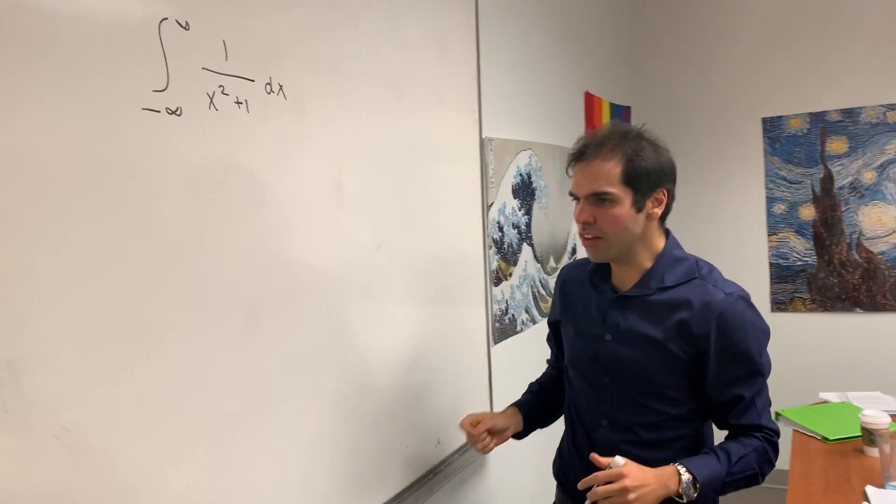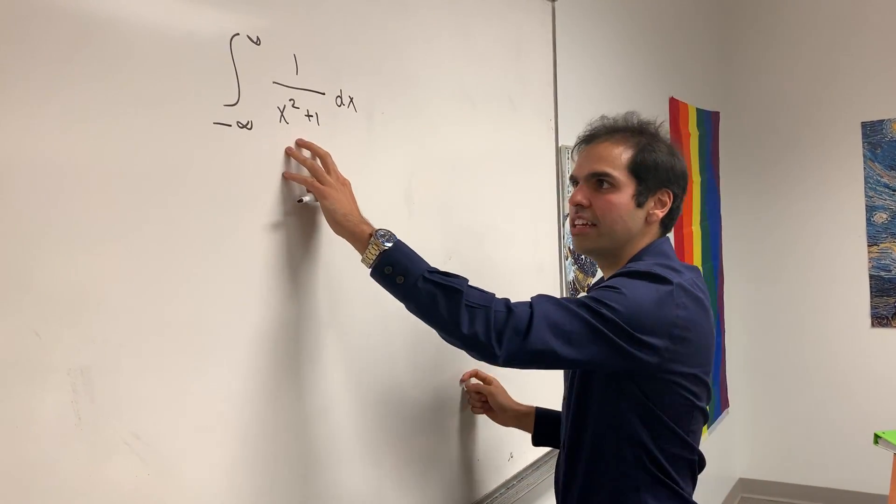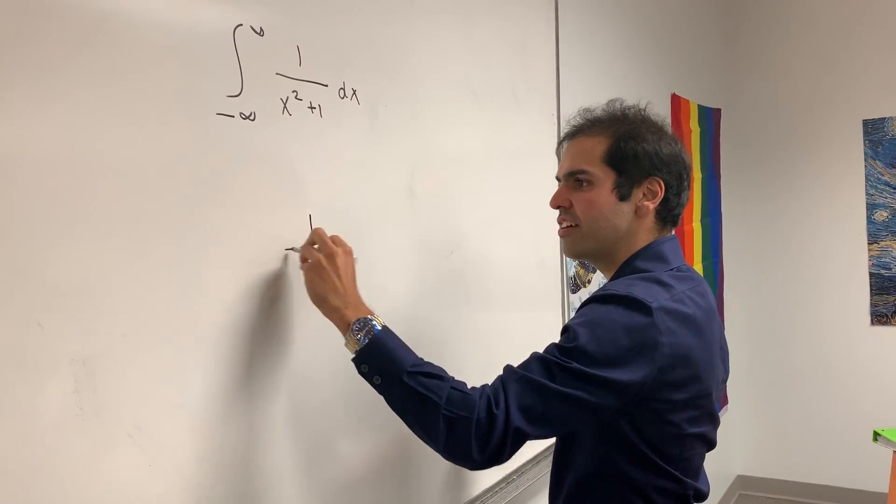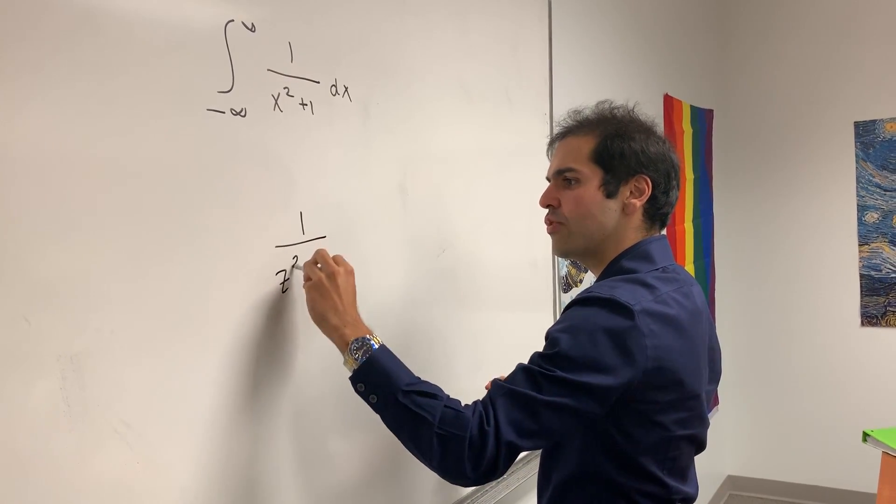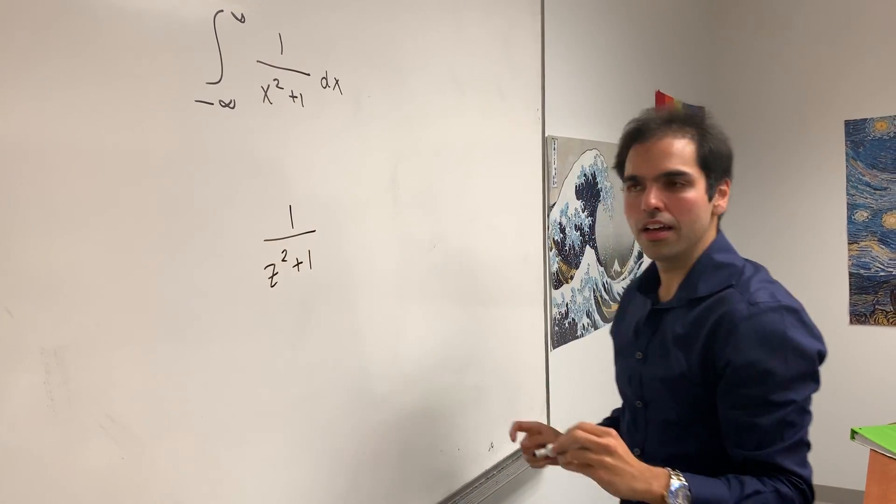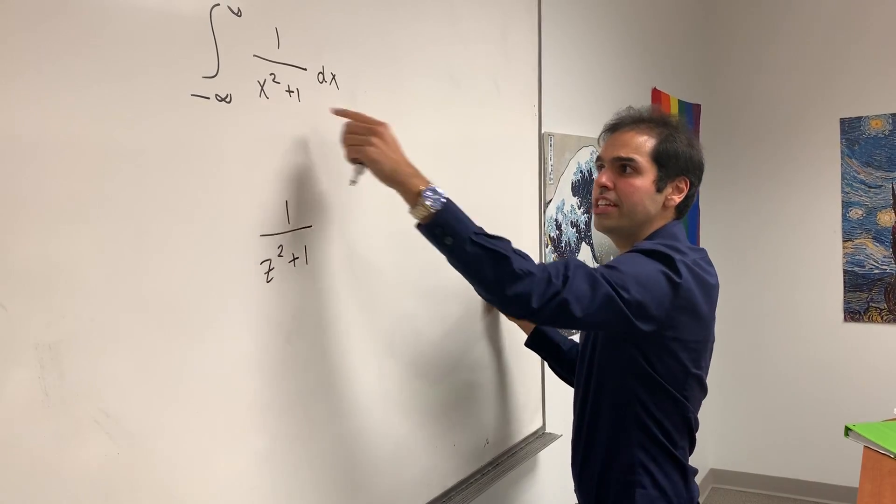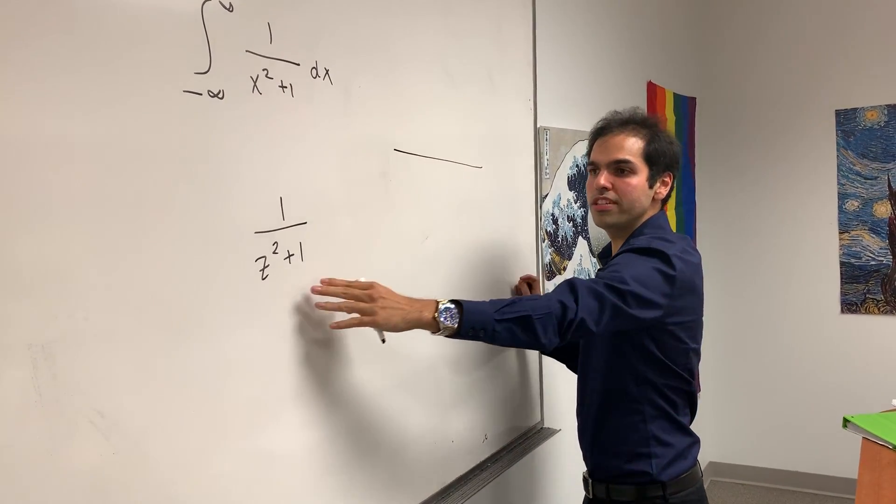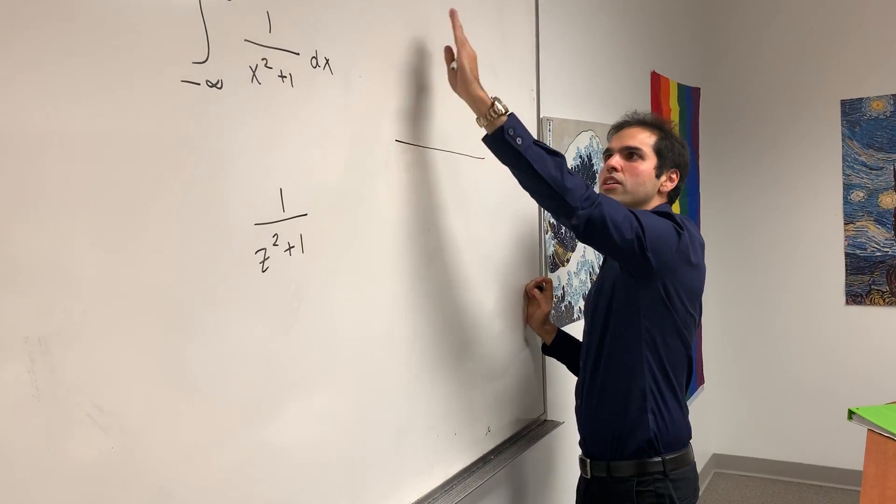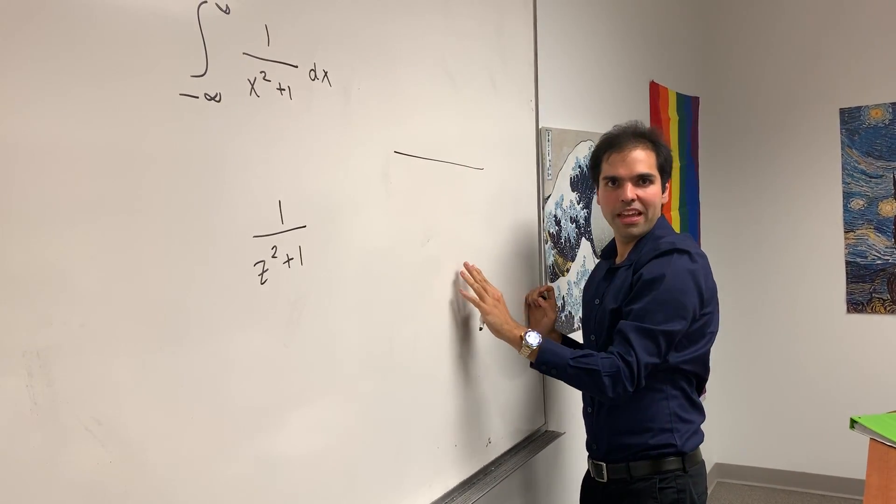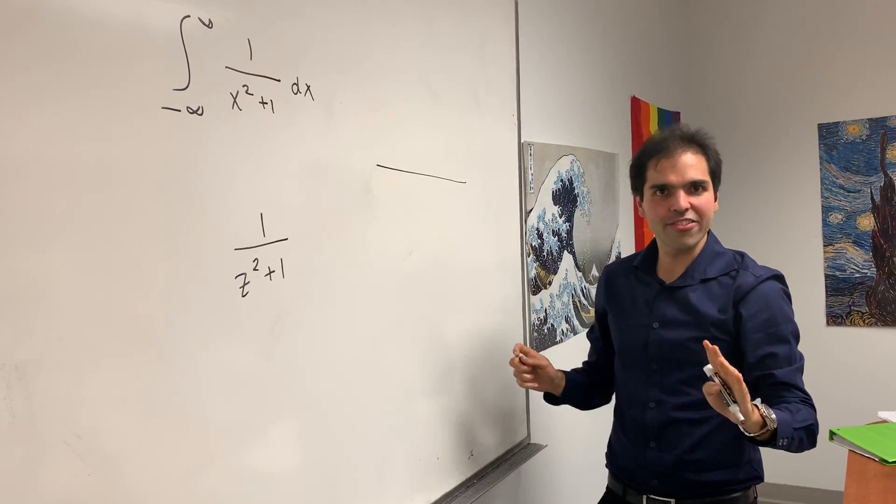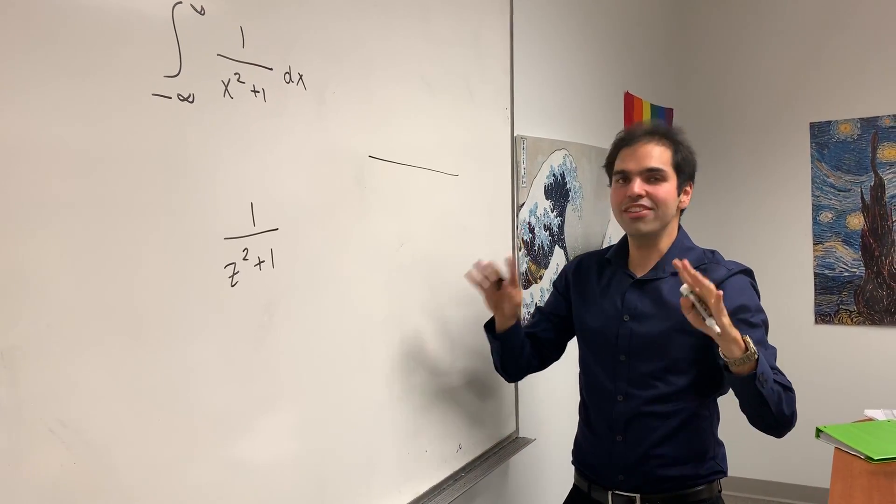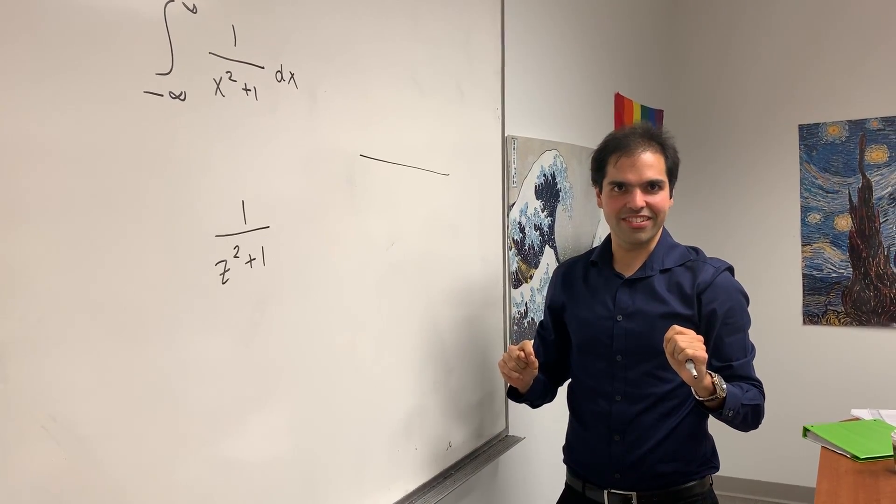Instead of integrating this function, let's integrate the function 1 over z squared plus 1. Why? Because here we're dealing with it on the real line, but if you do 1 over z squared plus 1, you do it on all of the complex plane. And it turns out there's a theorem that tells you it's actually very easy to calculate that integral.